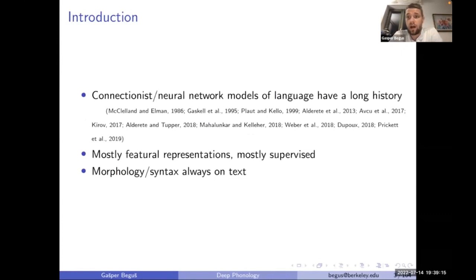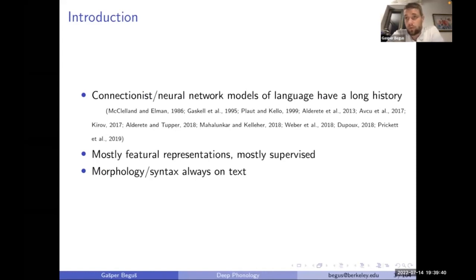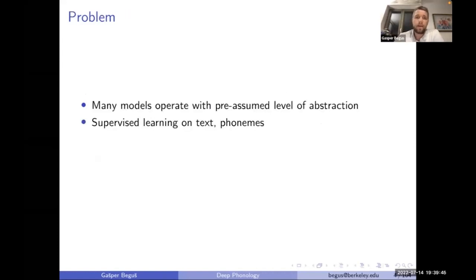A bit of history: connectionist or neural network models of language have a long history. But a lot of the time, these models need at least some level of abstraction — at least some extracted phonetic features, fully abstracted phonological features, or they focus on syntax or morphology.